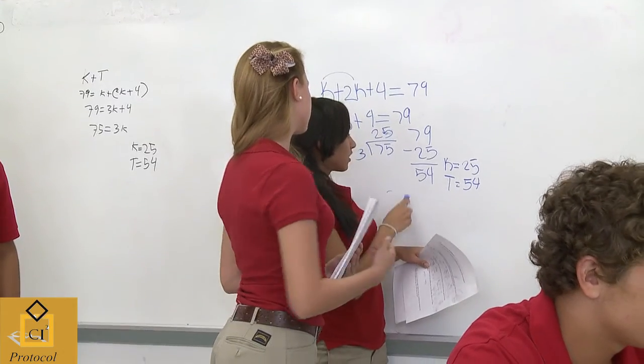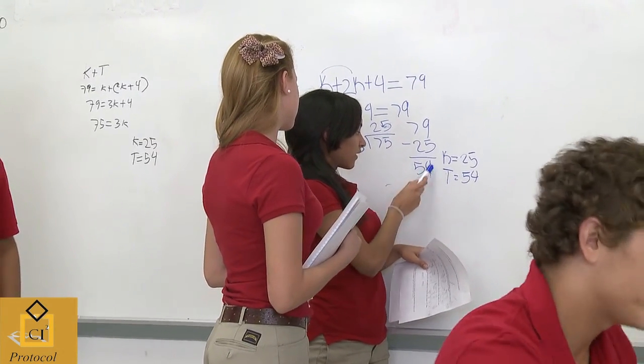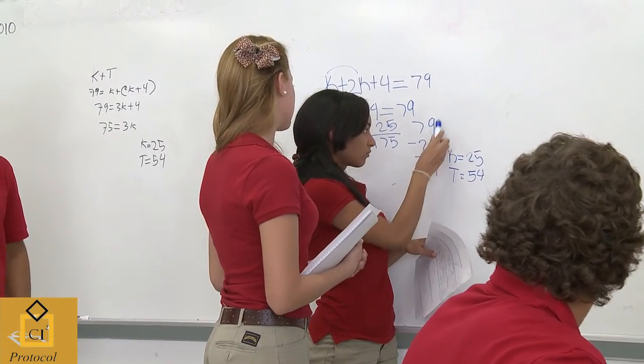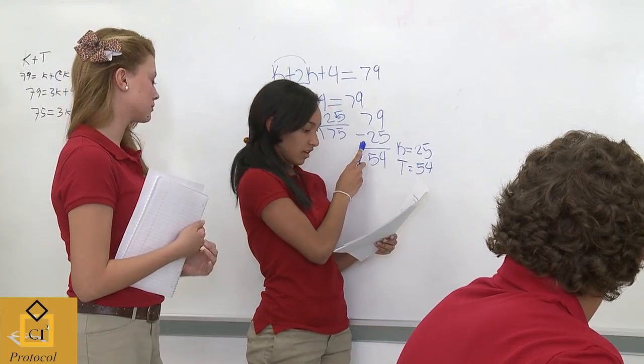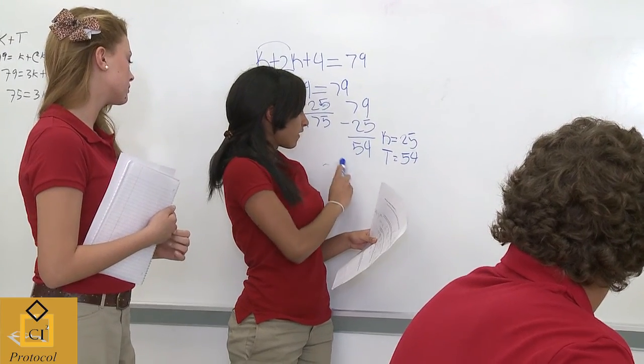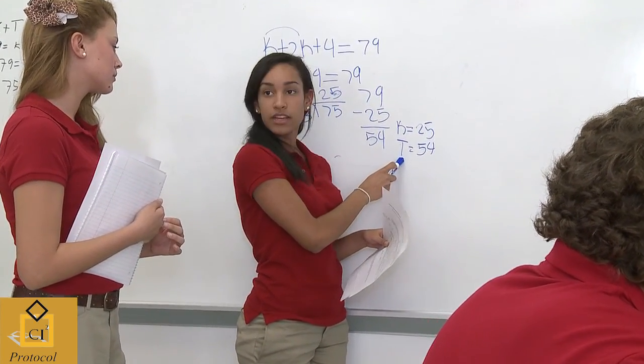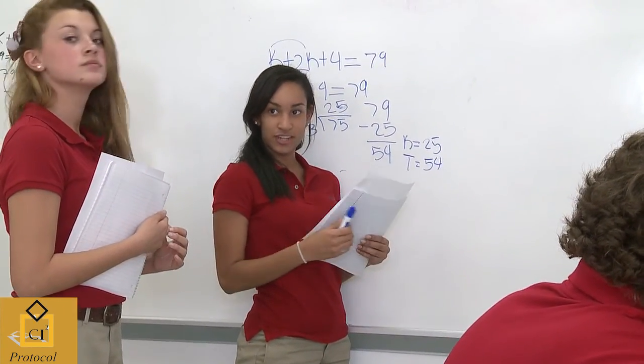Go ahead. Okay. Well, what she did was subtract 79 minus 25, which is the sum, 79. Since it's the sum of both ages together, she subtracted what she got for the k. And it gives you 54, which is the age for the t. Toshihiko. Toshihiko.